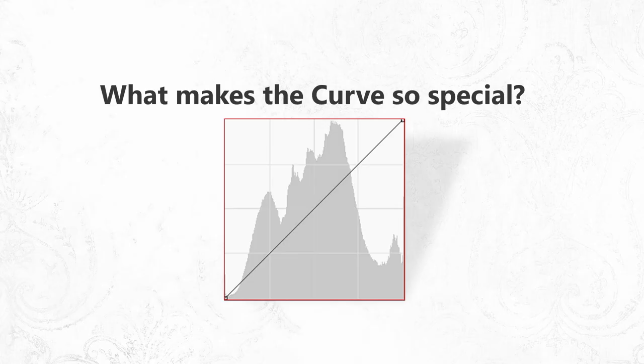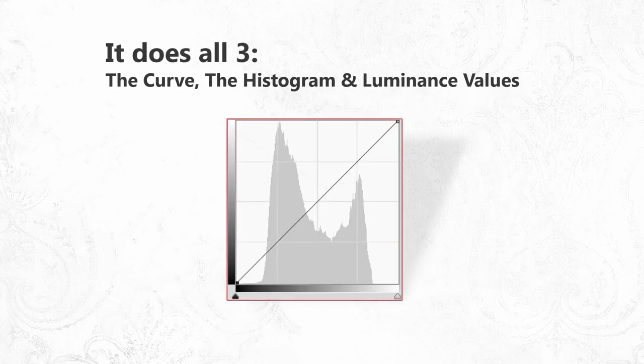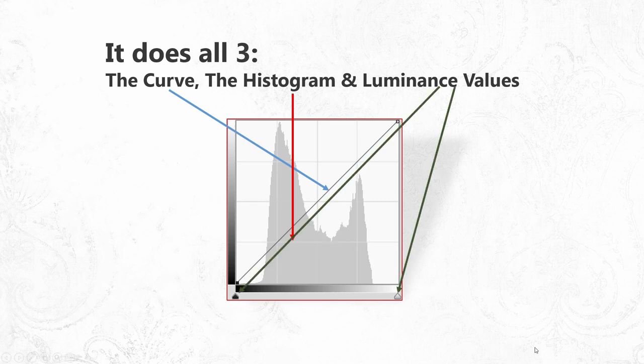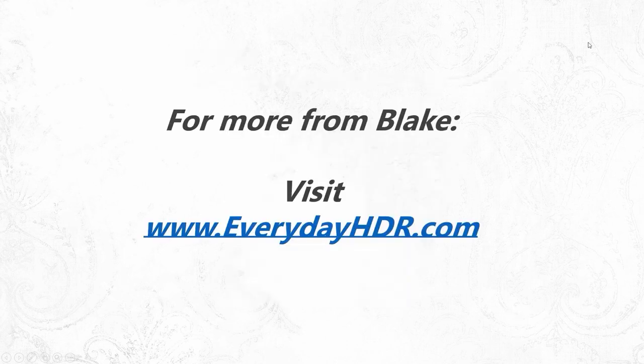What makes the curve so special is that it does all three: it's the curve, it's the histogram, and it's the luminance value. All of this information can be found in there. The curve is the area you edit for your tone, the histogram is contained right there in the curve, and then you have your luminance values at the bottom. Typically in Photoshop, you'll see this most clearly in this way.